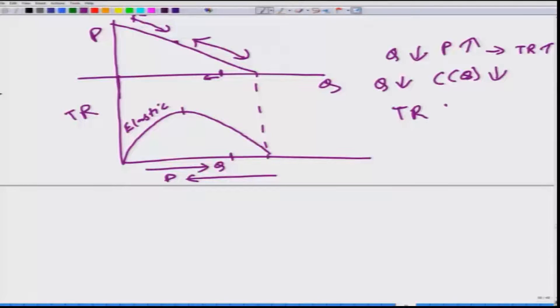What happens? TR goes up and total cost comes down. What it means as an implication: because profit equals TR minus TC, this entity is going up and this entity is going down. So, in the inelastic region, if the firm increases the price or decreases the quantity, then the profit goes up.